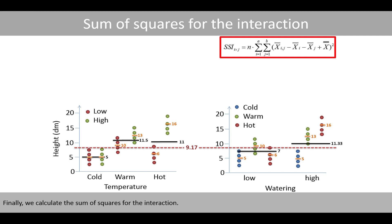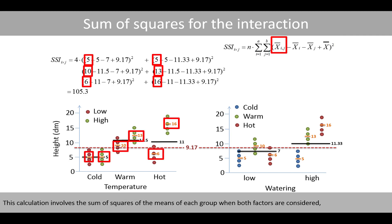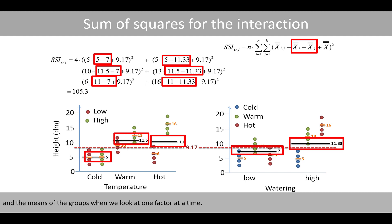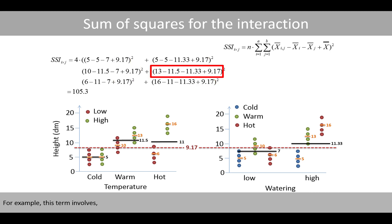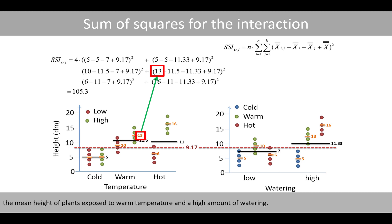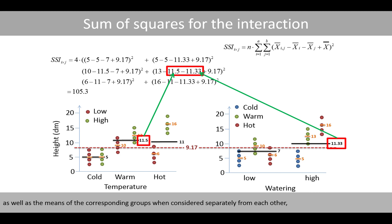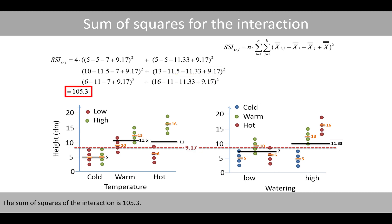Finally, we calculate the sum of squares for the interaction. This calculation involves the sum of squares of the means of each group when both factors are considered, the means of the groups when looking at one factor at a time, as well as the grand mean. For example, one term involves the mean height of the plants exposed to warm temperature and a high amount of watering, as well as the means of the corresponding groups when considered separately, and the grand mean. The sum of squares of the interaction is 105.3.